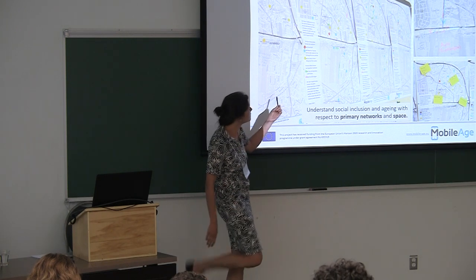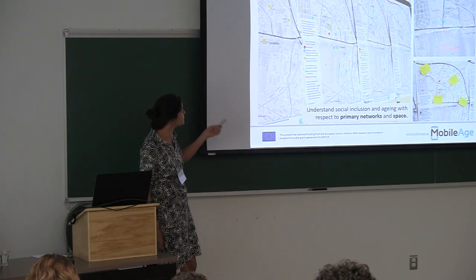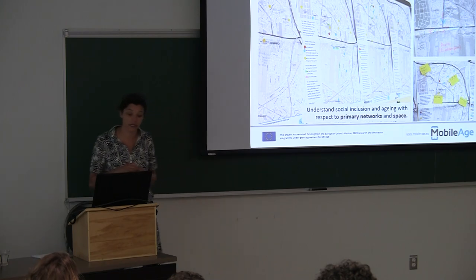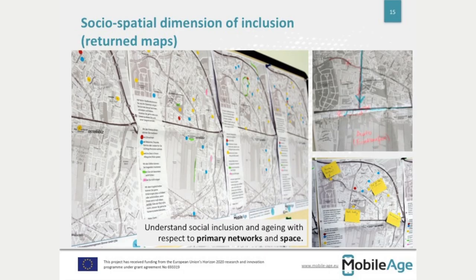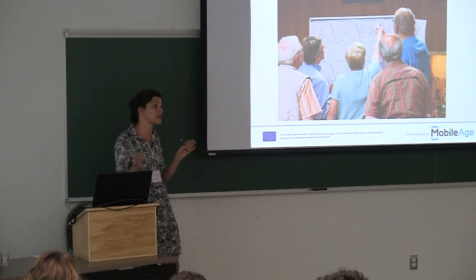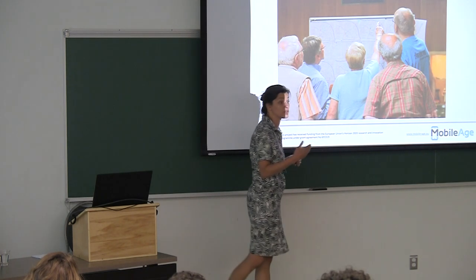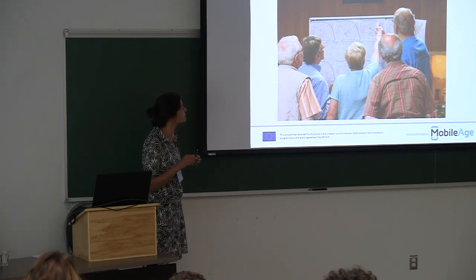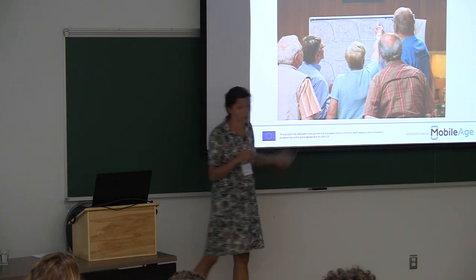When participants returned the maps, we put them all up together and started to look at the socio-spatial dimension of inclusion — how people actually relate to others within the district, what the mobility patterns are. We subsequently conducted a workshop where we put up all those maps and asked participants: what are the differences and similarities that matter to you? Why are the maps so different? What makes them different and what is important or not?